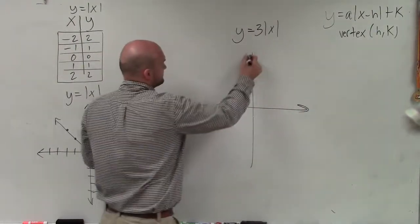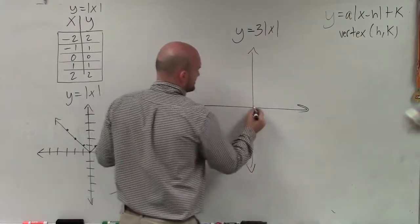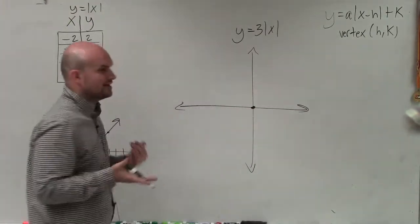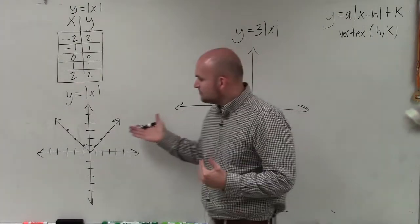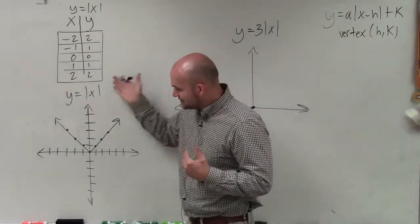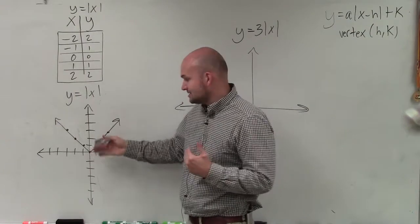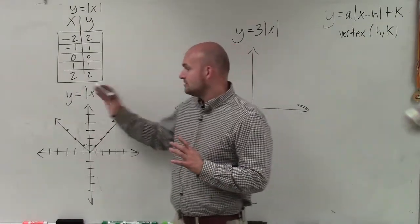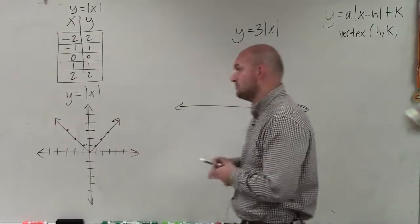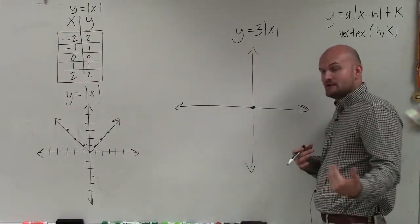Now, there's a couple different ways to think about this. The first way is just to create a table of values. And when creating a table of values, since the absolute value function has an axis of symmetry about the y-axis, I can just find values to the right and then reflect the points over to find the remaining part of the graph.